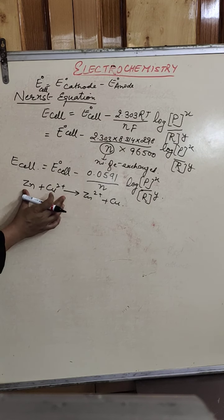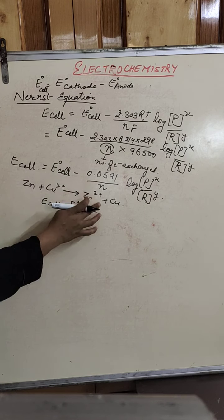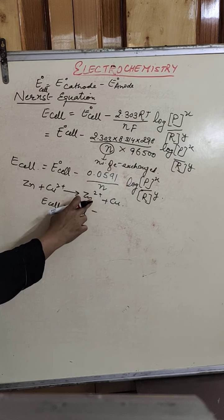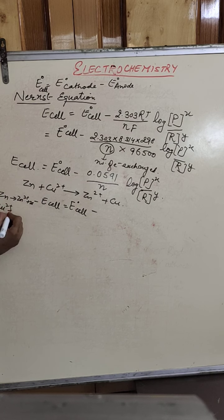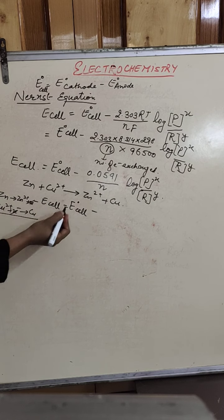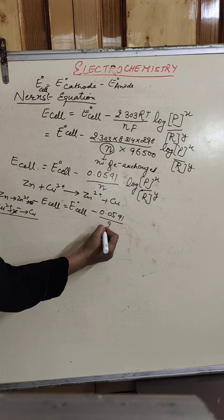Writing the Nernst equation for this cell reaction: zinc is converted into zinc 2+ by loss of 2 electrons, and copper ions gain 2 electrons to form copper. So 2 electrons are exchanged, making N equal to 2. Therefore the term becomes 0.0591 upon 2 in the Nernst equation.